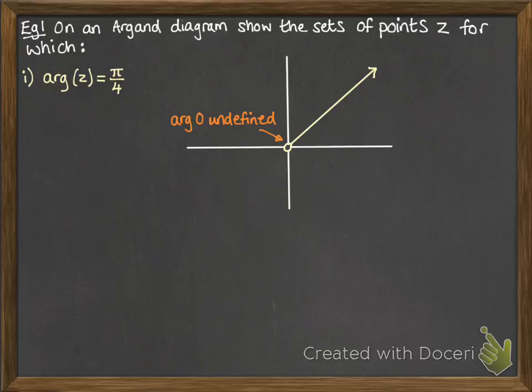So z could be anywhere along that line, since the angle between that line and the real positive axis is π/4. This is sometimes referred to as the half line from the origin in the direction of π/4.